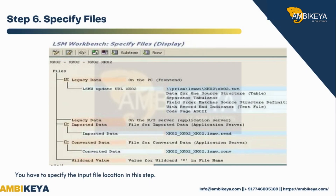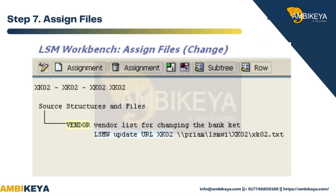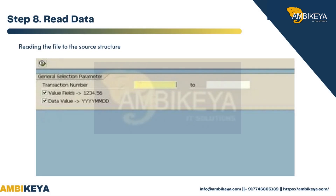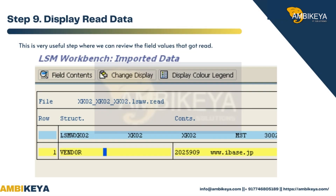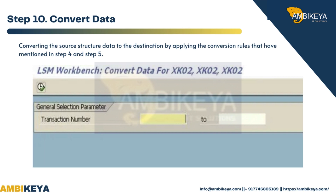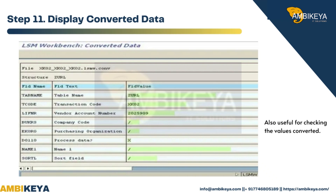Step 6: Specify Files — specify the input file location. Step 7: Assign Files. Step 8: Read Data — reading the file into the source structure. Step 9: Display Read Data — a very useful step where you can review the field values that were read. Step 10: Convert Data — converting the source structure data to the destination by applying the conversion rules defined in steps 4 and 5. Step 11: Display Converted Data.